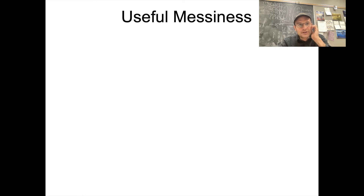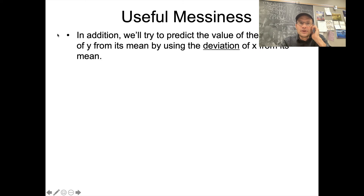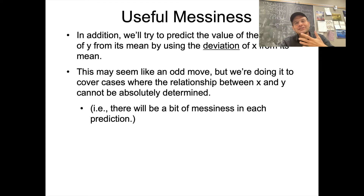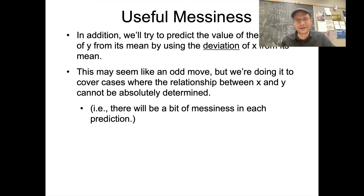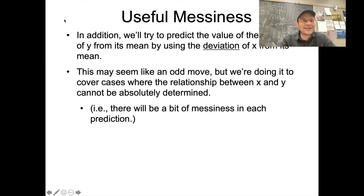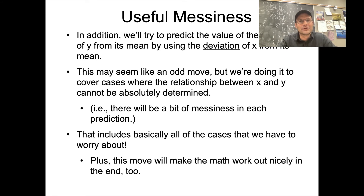In addition to assuming a linear relationship, we're going to try to predict the deviation of y from its mean by using the deviation of x from its mean. This helps in cases where the relationship between x and y cannot be absolutely determined — there will be some messiness in each prediction and we have to accept that. What we're trying to do is figure out how to deal with the messiness in the least messy way possible.